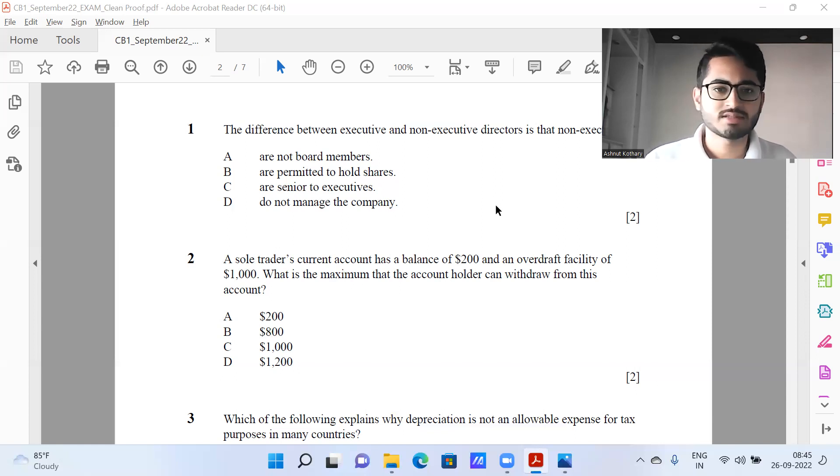Starting with the first question, this is fairly straightforward - difference between executive and non-executive members. Non-executive members are ones who are not involved in the day-to-day management of the company. So it should be option D. Question number two, the current account balance is 200, overdraft facility of 1000 is there. Therefore, the maximum amount that can be withdrawn from the account, given there's a balance of 200, is 1200. So again, option D.